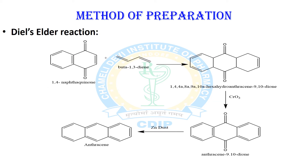The Diels-Alder reaction is a reaction between a conjugated diene and a dienophile (alkene groups), and it is a type of cycloaddition reaction. Here, the Diels-Alder reaction occurs between 1,4-naphthoquinone and buta-1,3-diene, resulting in a dione intermediate which undergoes further reaction with a reducing agent. This results in anthracene-9,10-dione, and when you treat this molecule with zinc dust, reduction occurs and ultimately the formation of anthracene molecules results.